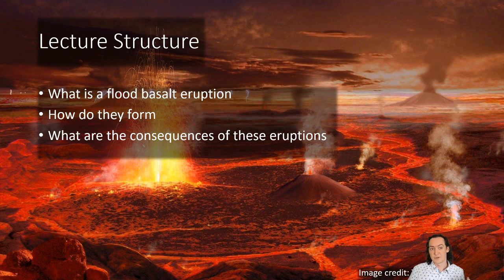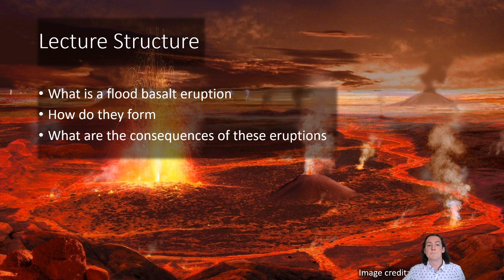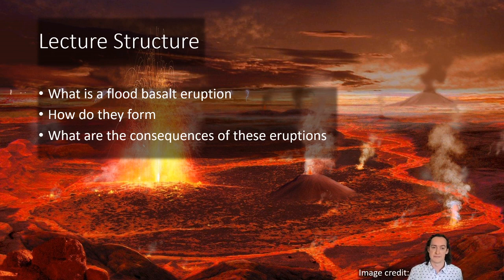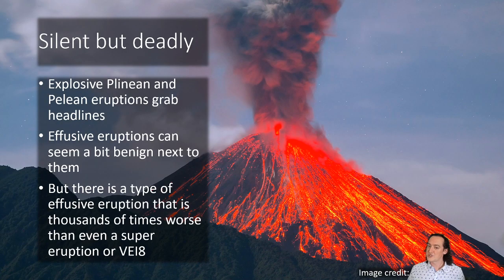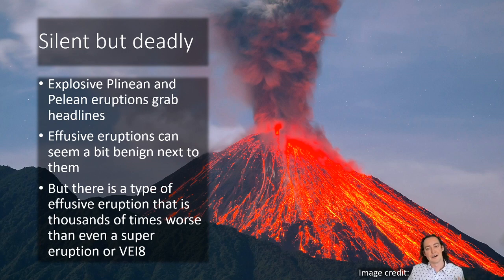In this lecture we're going to be exploring what a flood basalt eruption is, what it looks like, what it produces, and exploring the mechanisms by which we think these kind of eruptions form, and then the consequences of these eruptions for both the shape of the Earth's surface and the evolution of life. However, what's interesting about these eruptions is the style they represent gets forgotten about a little bit when we talk about volcanoes.